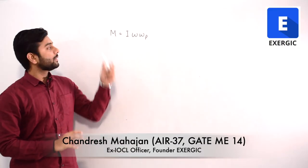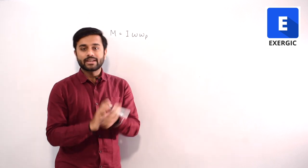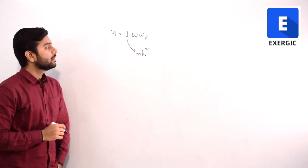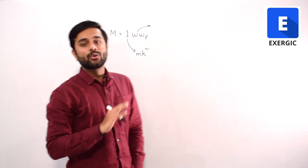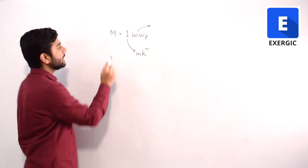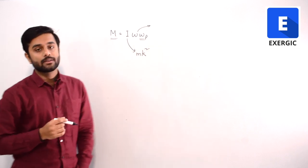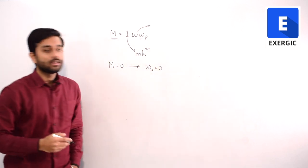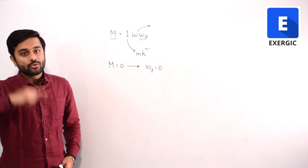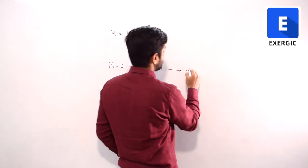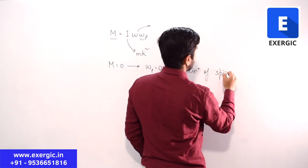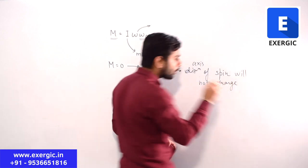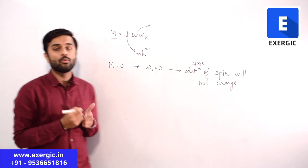We know that M is equal to I·omega·omega_p. For a given disk of a given mass and given shape, I is not going to change because I equals m·k squared, where k is the radius of gyration. Omega will also not change if there are no frictional losses. So we can clearly see that M will directly affect omega_p. If M is 0, then omega_p will also be 0, and if omega_p is 0, the direction about which it is spinning will not change — the axis of spin will not change in orientation. It will keep spinning about the same axis if there is no external moment being applied.